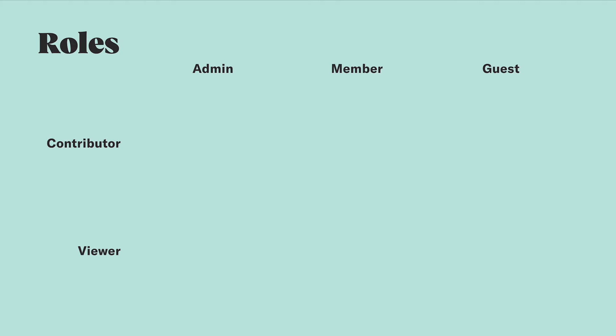An admin is somebody who has all of the typical member permissions, but is also able to take a few additional actions to manage the organization. A member is somebody who is part of your organization and has access to all of the projects and work in Abstract. A guest, on the other hand, is someone who is not part of your organization, but has been invited to specific projects, giving them access to only those projects.